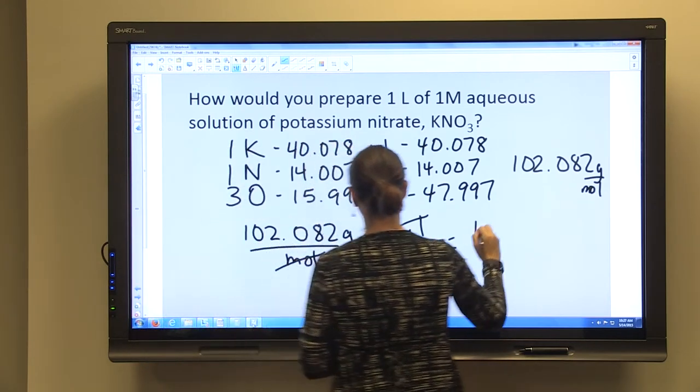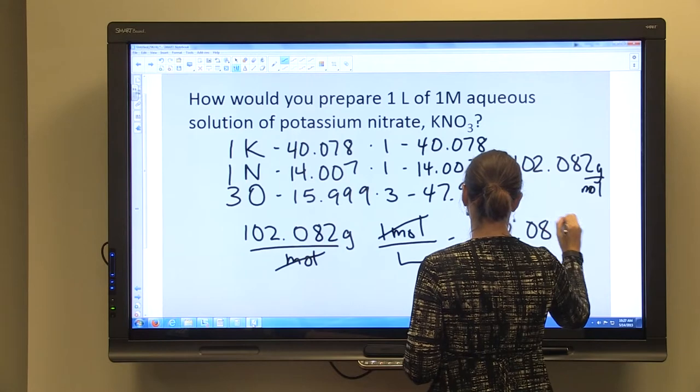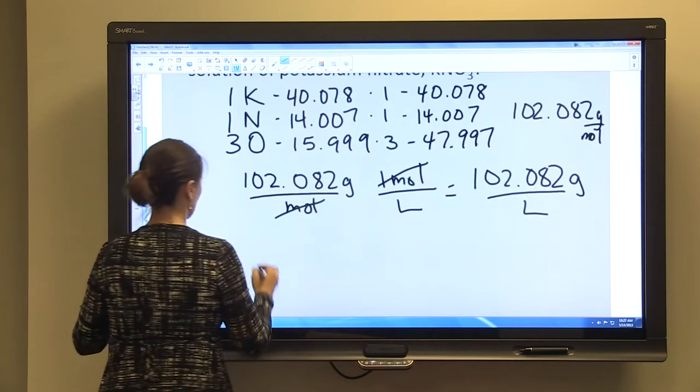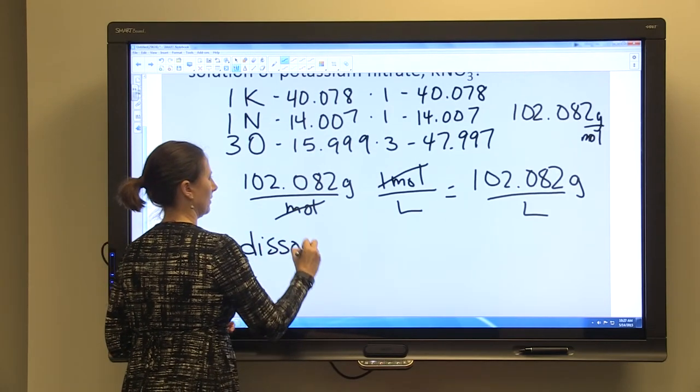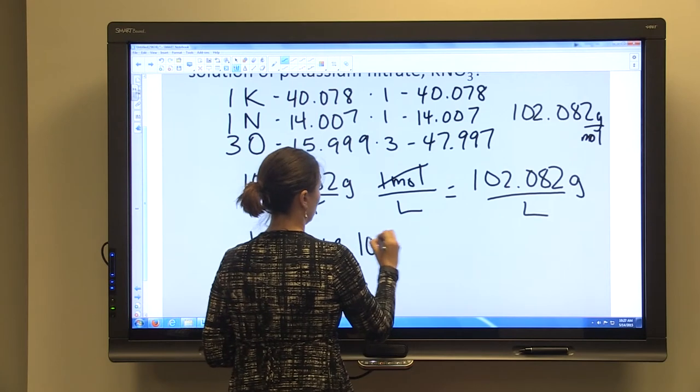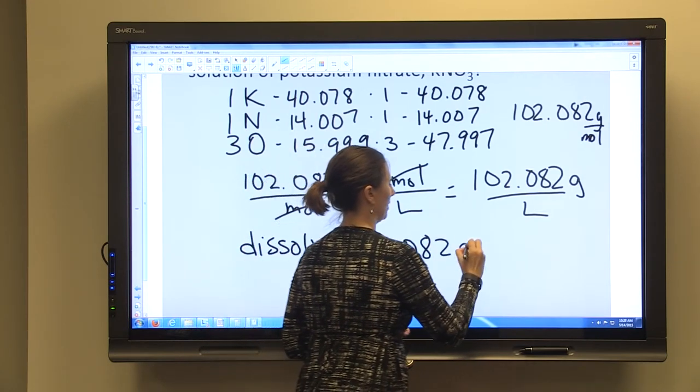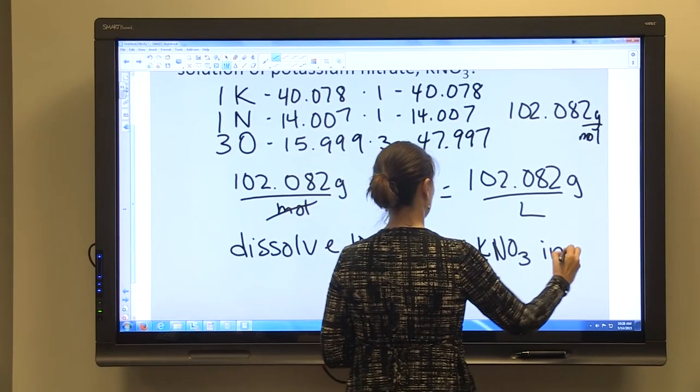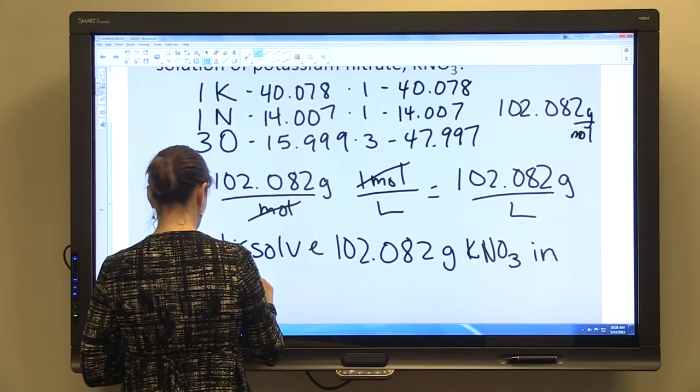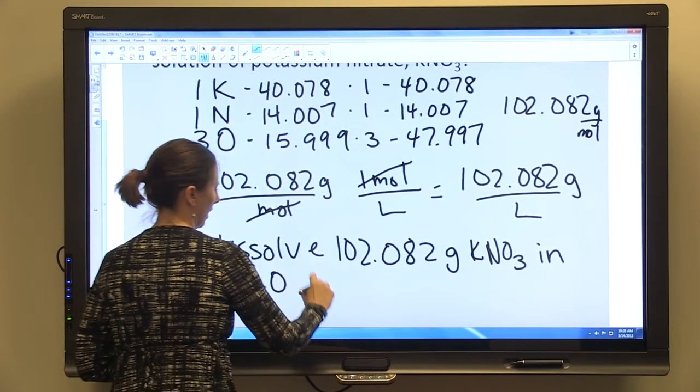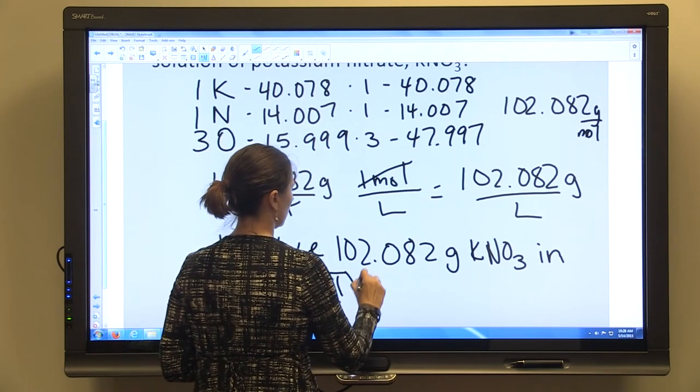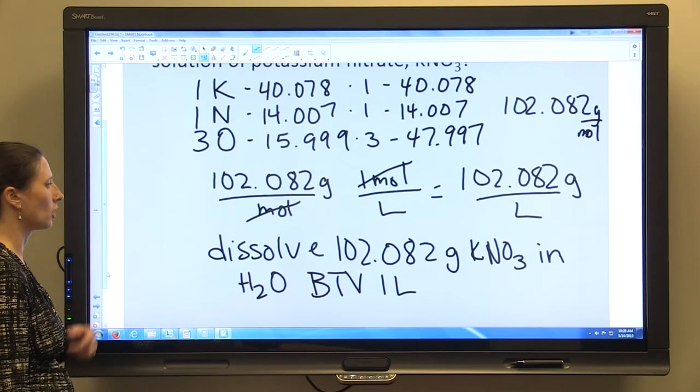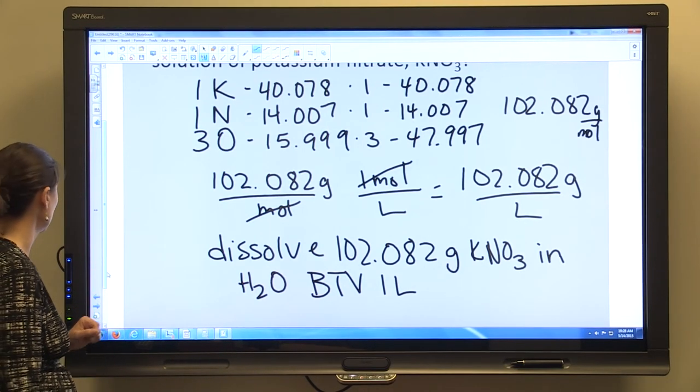And we'll know we need 102.082 grams per liter. So then you need to dissolve 102.082 grams of potassium nitrate in water and bring to the volume of one liter. So that's how we would prepare one liter of a one molar potassium nitrate solution.